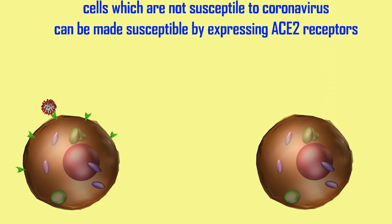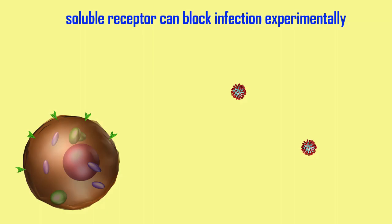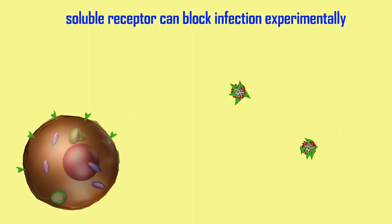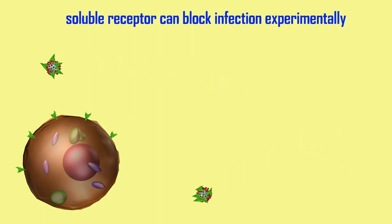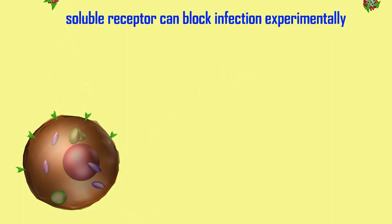If, however, cells are induced to express ACE2, they can then be infected by coronavirus. One can also block coronavirus infection by bathing a tissue culture with soluble ACE receptors. These soluble receptors bind the coronavirus and prevent it from binding the receptors actually present on cells.